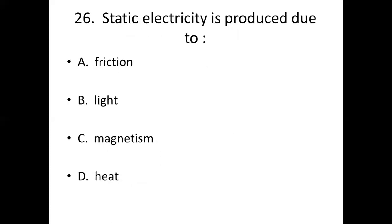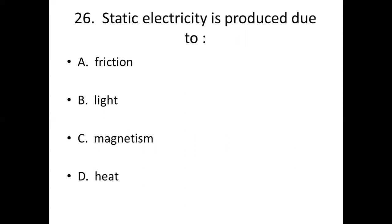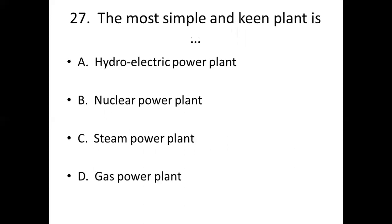Twenty-sixth bit. Static electricity is produced due to dash. Option A: Friction. Option B: Light. Option C: Magnetism. Option D: Heat. Answer: Option D, Heat.